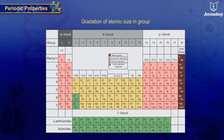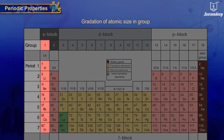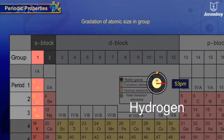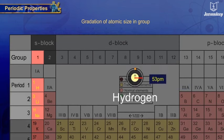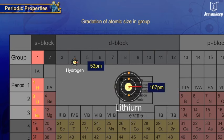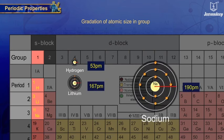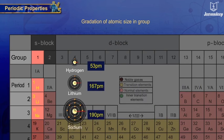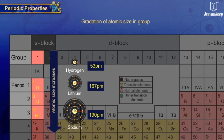Let us observe the gradation of atomic size in the case of elements of the first group. Atomic radius of hydrogen is 53 picometers, lithium is 167 picometers, and sodium is 190 picometers. Thus we see that atomic size increases from top to bottom in a group.